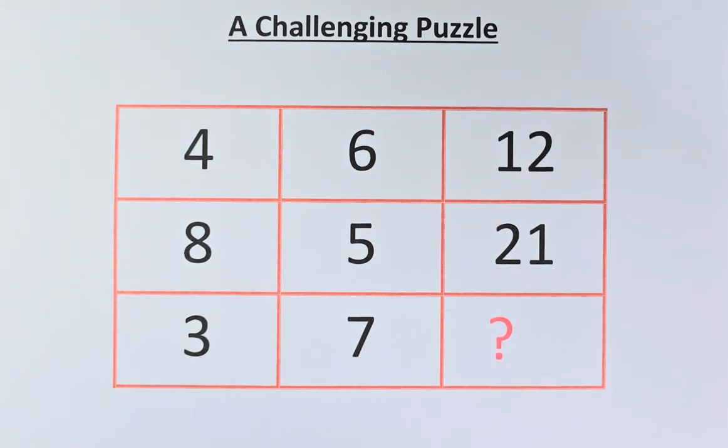The numbers in the puzzle are as follows. In the first row, we have 4, 6 and 12. In the second row, we have 8, 5 and 21. And in the final row, we have 3, 7 and a question mark.